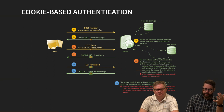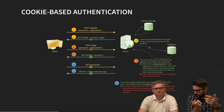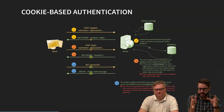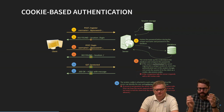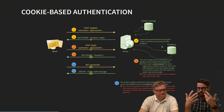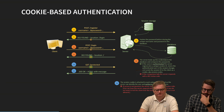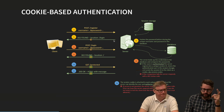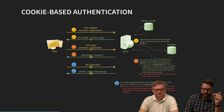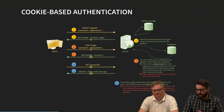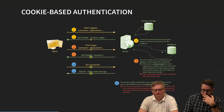When the user posts to the register endpoint, the server hashes the password and stores the username and hashed password in the database. The plain text password is never stored — only the hash. After registration, we do a Post-Redirect-Get (PRG) pattern and redirect the user to the login page.